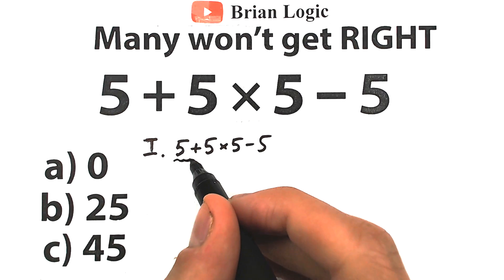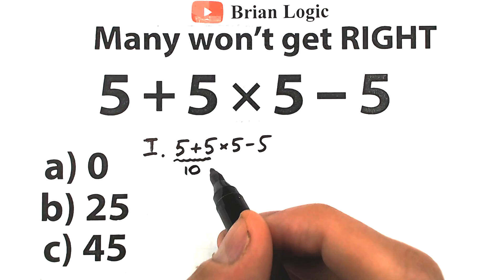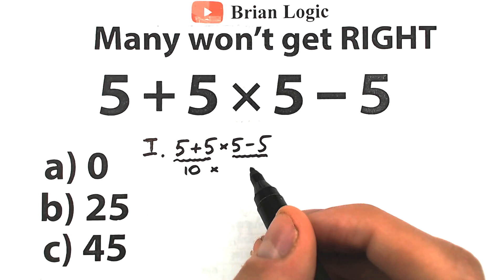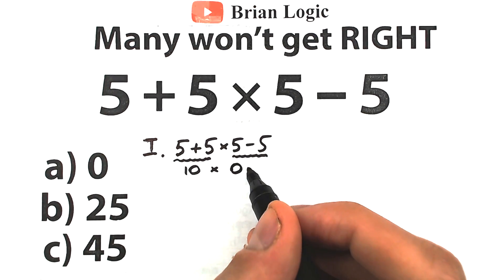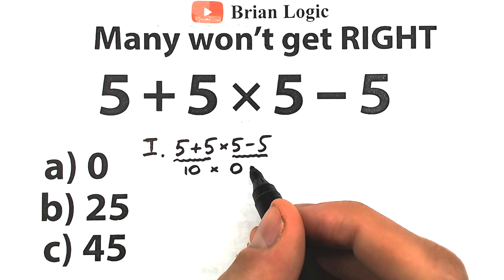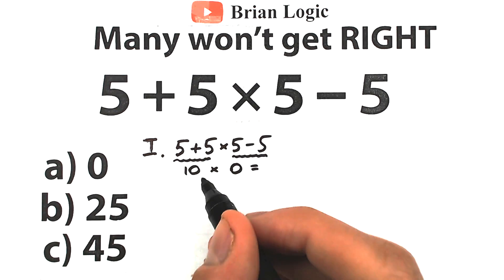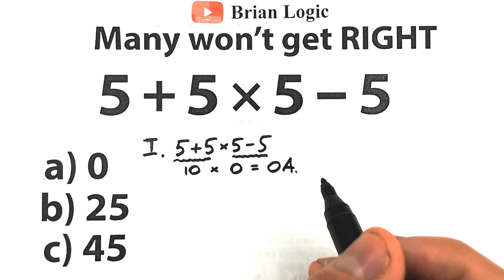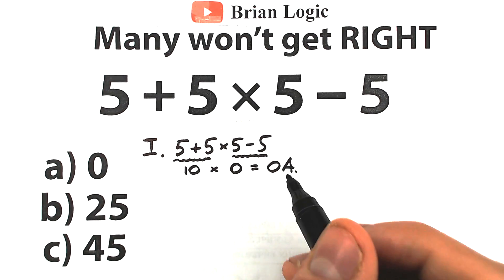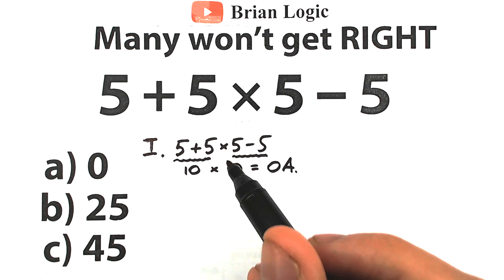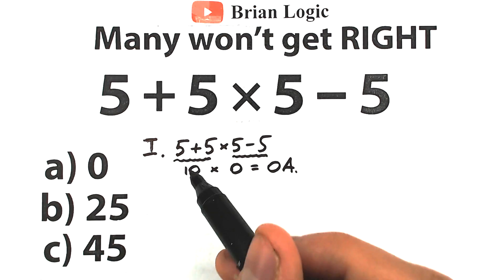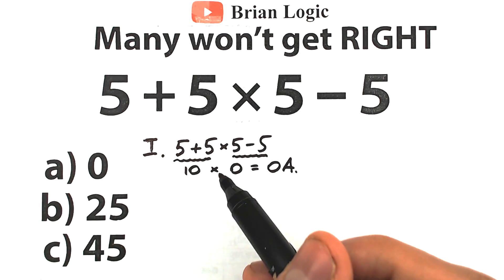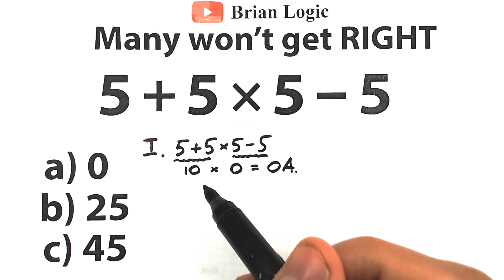They say: okay, 5 plus 5 on the left-hand side equals 10, and we have times, and we have 5 minus 5 on the right-hand side equal to 0, and we have like a correct answer — maybe 10 times 0 equals 0. We have this option A. So first type of students solve this question like that. They want to solve this randomly: they start with addition, they jump from left to right to subtraction, then multiplication — they solve this question absolutely randomly.